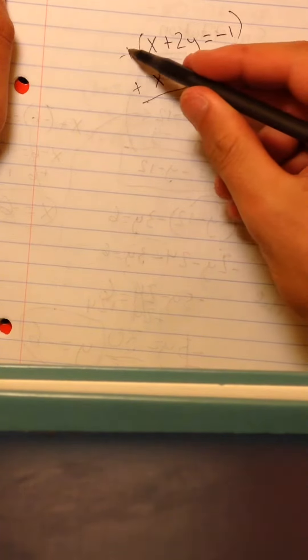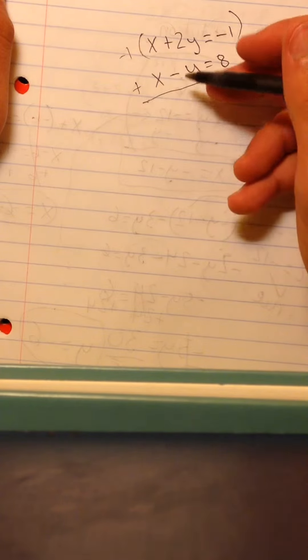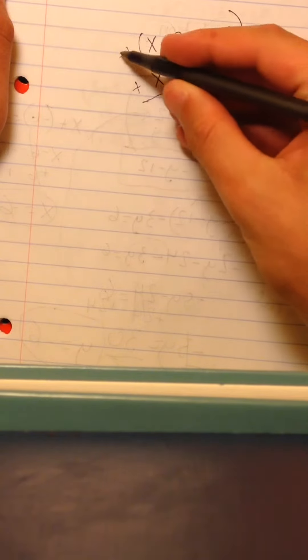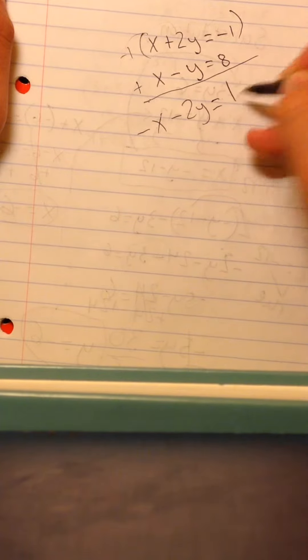So we're going to distribute the negative 1 among all these, and then it's going to be negative x minus 2y is equal to 1.